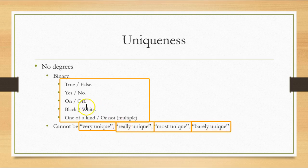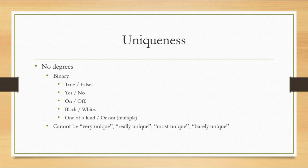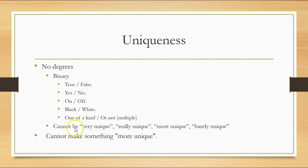Just keep in mind that if something is unique, that means there's only one of it. You cannot make something more unique — if it's already unique, nothing you can do will make it more unique. It's either unique, meaning it's only one of a kind, or it's not.